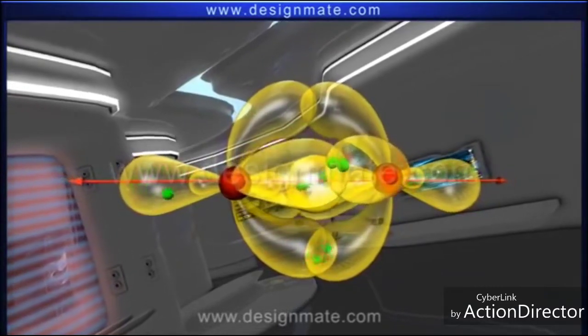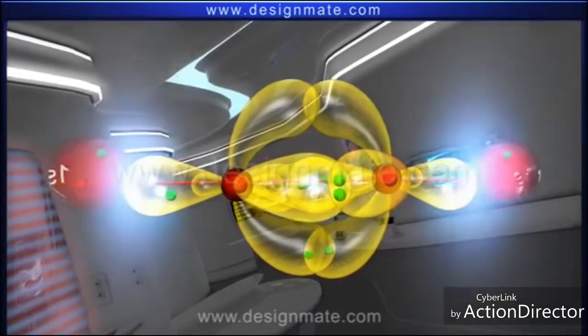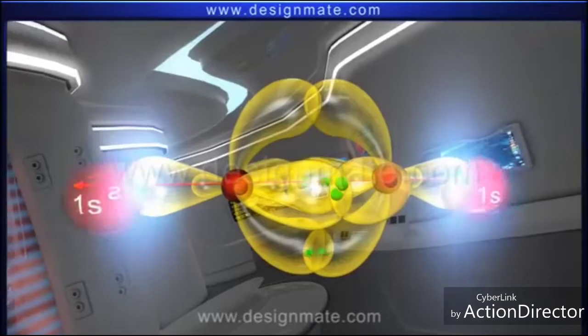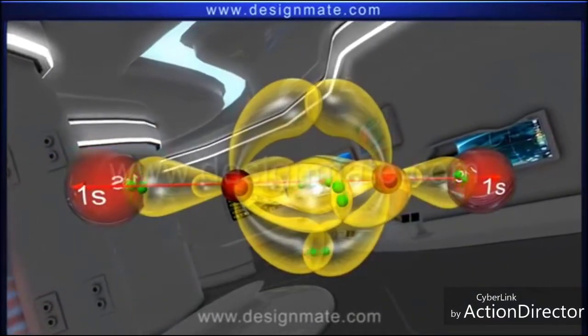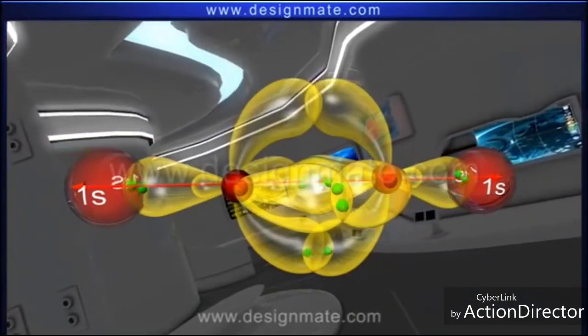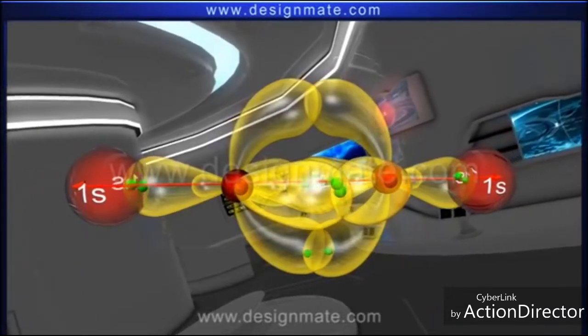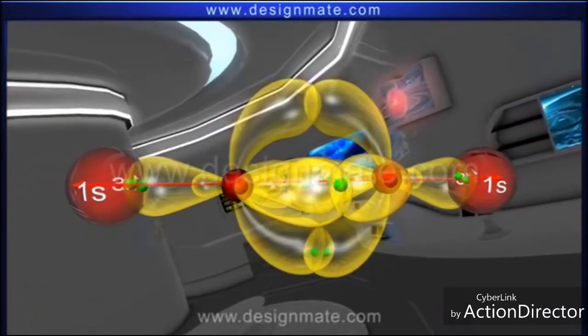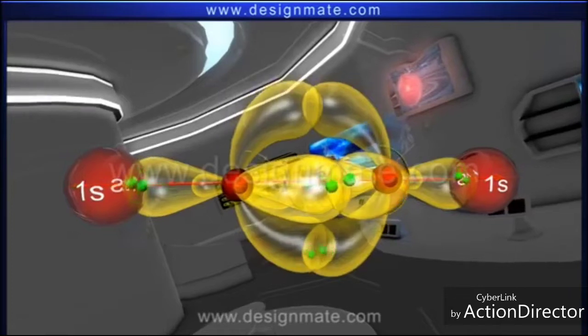The fourth valency of each of the carbon atoms is satisfied by two 1s orbitals of hydrogen, which also make sigma bonds along the internuclear axis. The quest of the carbon atom is now complete, and an acetylene molecule is formed.